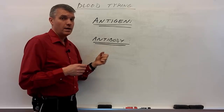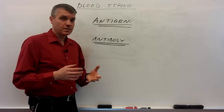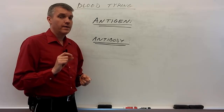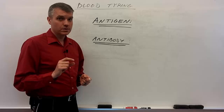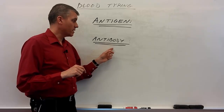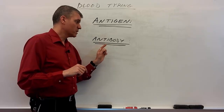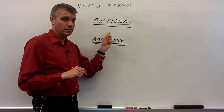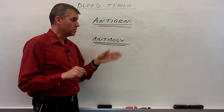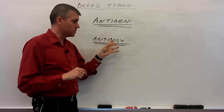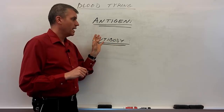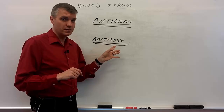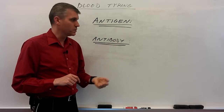The second term is antibody. Antibodies are little proteins made by white blood cells, and those antibodies will specifically bind to a very specific antigen. You can see the tight relationship between these two terms, and the importance of them in blood typing will become apparent as we move on.